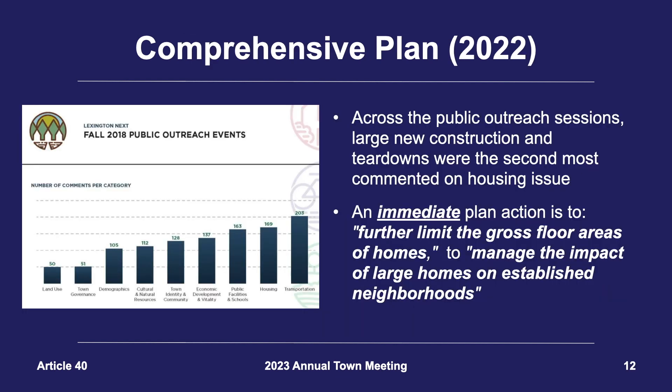The implementation of the 2016 bylaw did not ameliorate the issue of large new houses, and during the public outreach process for the 2022 comprehensive plan, the sentiment surrounding large new construction and teardowns was the second most commented-on housing topic after affordable housing. As such, the comprehensive plan advisory committee, and later the planning board, solidified an immediate plan action to further limit GFA in order to manage the impact of large homes.